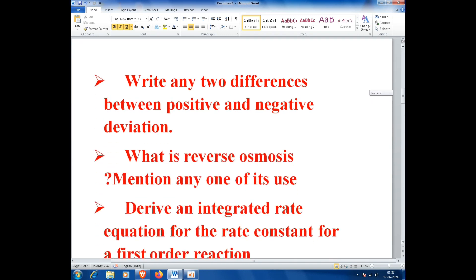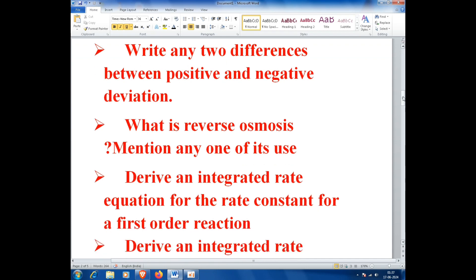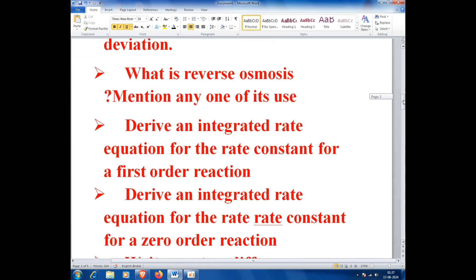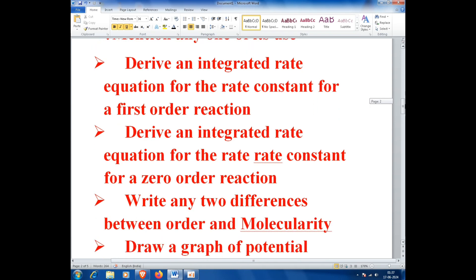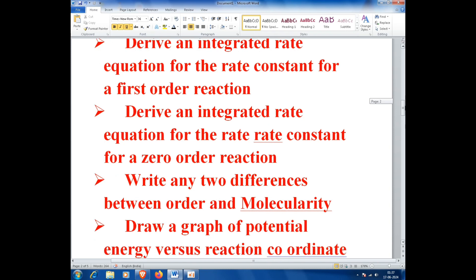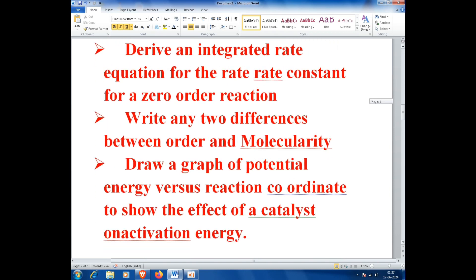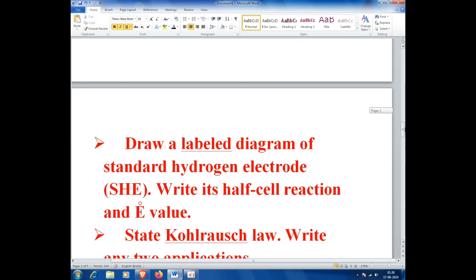Derive an integrated rate equation for the rate constant for a first-order reaction. Derive an integrated rate equation for the rate constant for a zero-order reaction. Write any two differences between order and molecularity. Draw a graph of potential energy versus reaction coordinate to show the effect of a catalyst on activation energy.